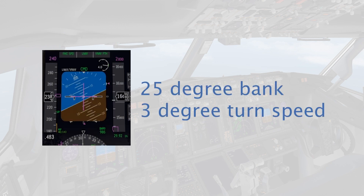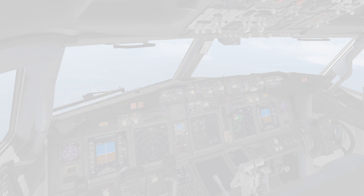All turns in a holding pattern use a bank angle of 25 degrees, or a 3-degree change in direction every second on the general compass. For example, if you were flying at 270 and made a right turn, within two seconds you should be at 276.